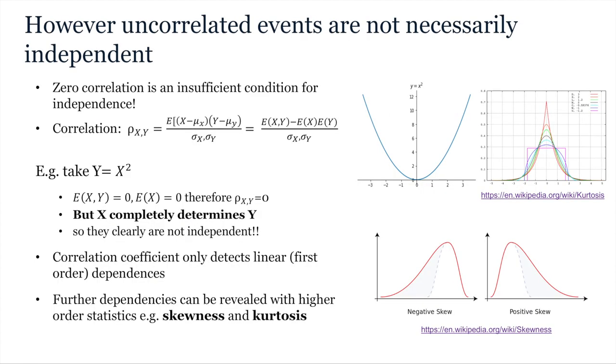Just one word of warning however: while independent events are uncorrelated, lack of correlation is not sufficient for two events to be independent. Take this graph of y equals x squared and the definition of correlation. The mean or expectation of x is zero as is the mean of the joint distribution so correlation will be zero, however x completely determines y so they are clearly not independent. The reason for this divergence is that the correlation coefficient only detects linear first order dependencies. Further dependencies must be revealed with higher order statistics, for example skewness and kurtosis.